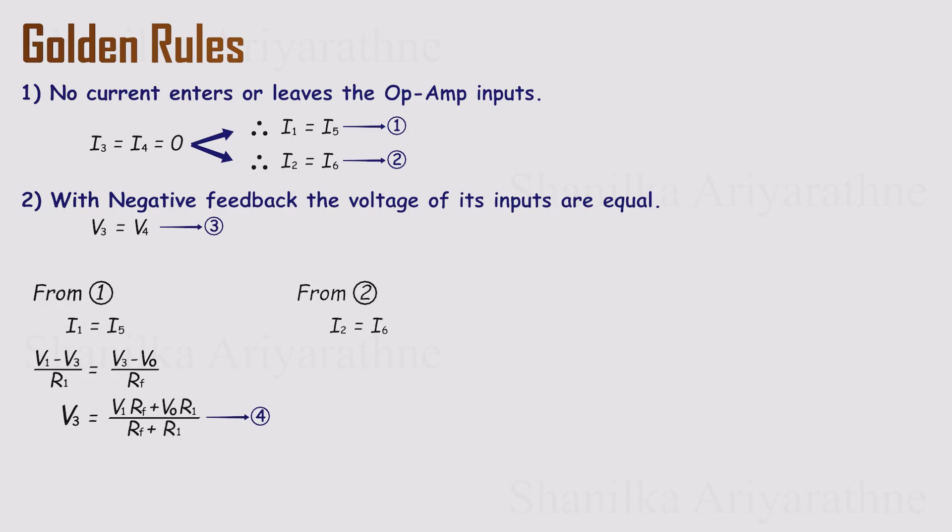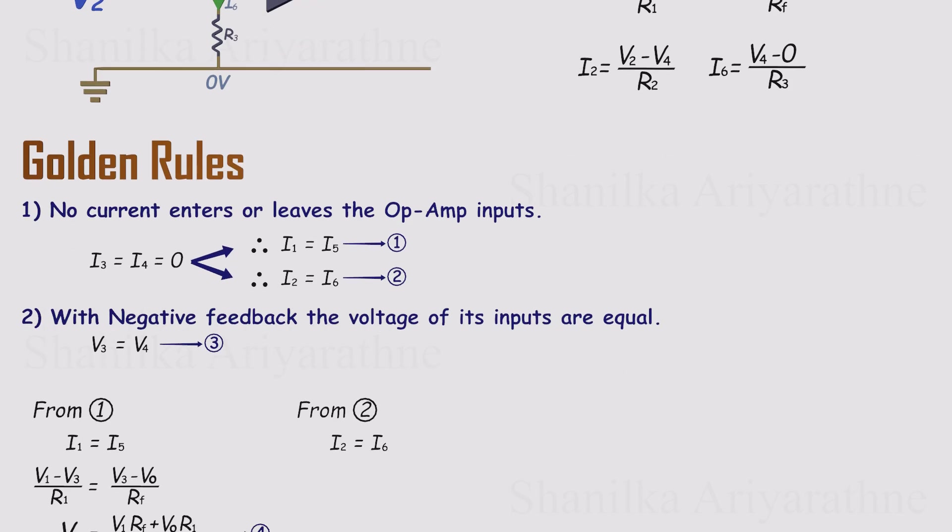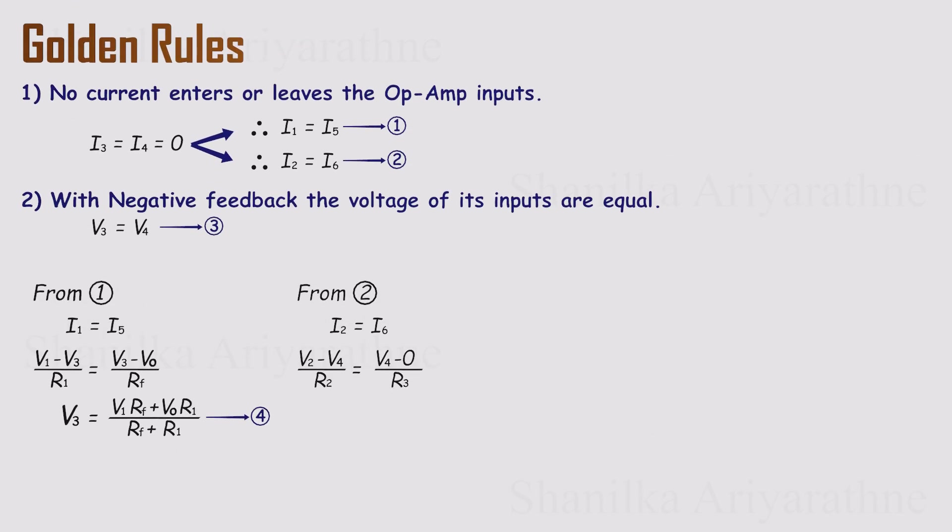Now, let's do the same for equation 2. I2 equals I6. Again, watch the resistors the currents flow through. I2 flows through R2 and I6 flows through R3 down to ground. Writing both currents with Ohm's law and substituting them back into the equation gives us an expression for V4, the voltage at the non-inverting input.